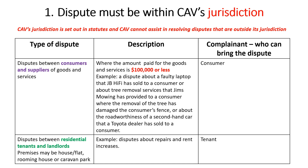The first is disputes between consumers and suppliers of goods and services where the amount paid is $100,000 or less. A consumer — that is, the purchaser — can request Consumer Affairs Victoria to assist in resolving a dispute with the supplier. For example, a dispute with JB Hi-Fi over a faulty laptop, with Jim's Mowing for damaging a fence while removing a tree, or with a Toyota dealer selling an unroadworthy secondhand car.